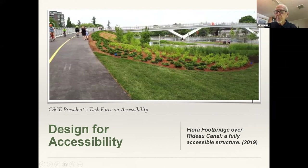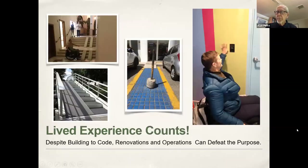We focus both on accessibility — the structural and wheelchair accessibility components — and universal design. Our initial focus has been to build awareness in our community of engineers who design things across the country. We do that because projects are time sensitive and money sensitive, and people often aren't aware of what can be done to make things easier. There are plenty of codes and manuals out there. The City of Ottawa's design manual, for example, runs to 274 pages. Toronto's is even larger — a complex document to work through for the uninitiated.